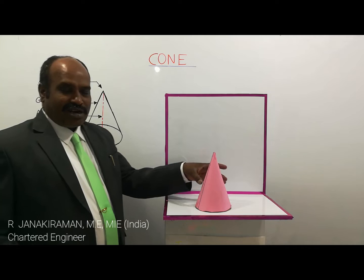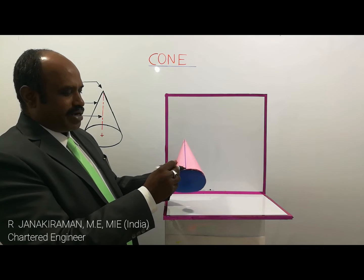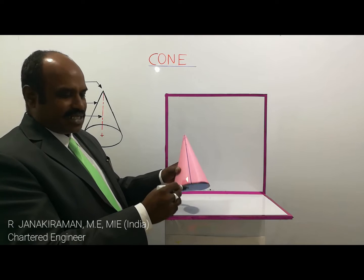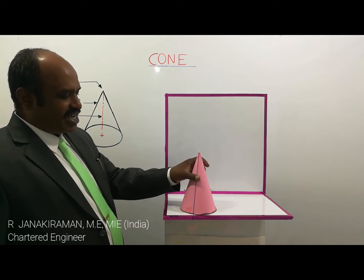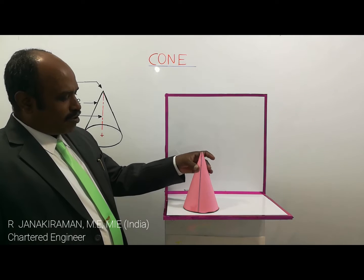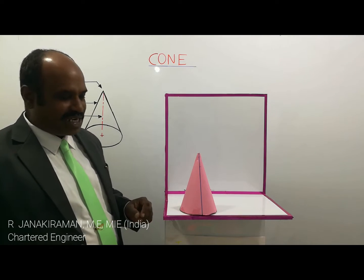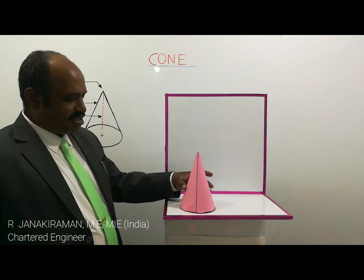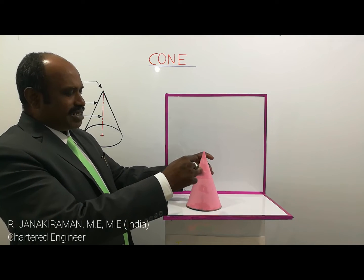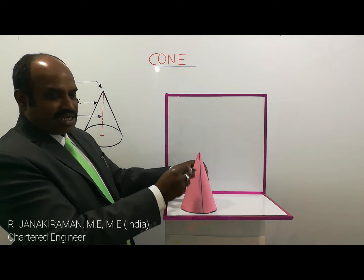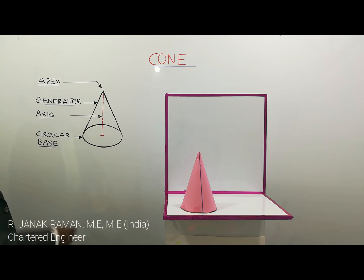The slant edges in a cone are called generators. A line joining the apex and any one point on the base circle is called a generator. There are numerous generators along the lateral surface of the cone. One generator is shown here — basically it is a slant edge; it is inclined, so it is called a slant edge. The slant edges in a cone are called generators — remember this. This particular part is called the lateral surface, which has numerous generators. The axis and the circular base are also shown in this diagram.